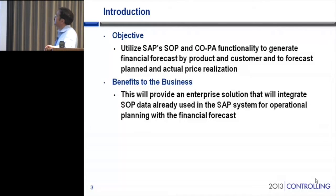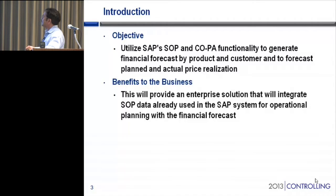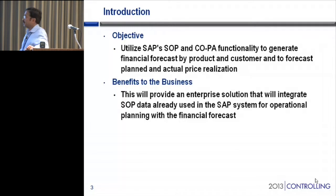Here's our objective for this session today. We're going to utilize the SAP Standard Module SOP and COPA functionality to generate financial forecasts by product and customer, and to forecast planned and actual price realization. When I say by product and customer, you can have multiple other characteristics also if you wanted to — it's not only limited to those two characteristics.